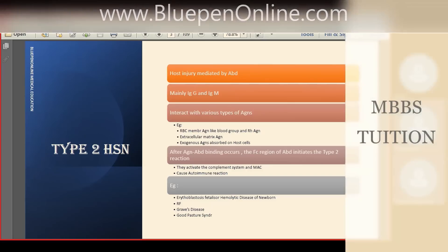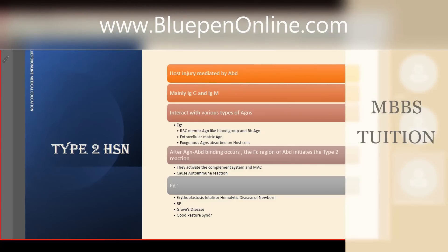Antibodies interact with various types of antigens. Different types of antigens include RBC membrane antigens like the ABO blood group and Rh antigens, as well as extracellular matrix antigens.